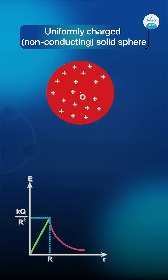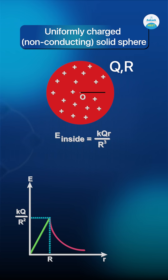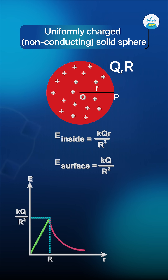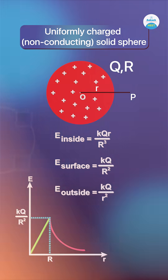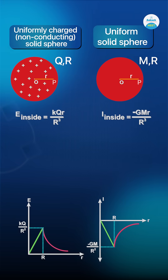Now let us consider another case. We have a uniformly charged non-conducting solid sphere of charge Q and radius R. Electric field at an inside point is equal to KQ by r cube. Electric field at a point on the surface is KQ by R square, while electric field at an outside point is KQ by r square.